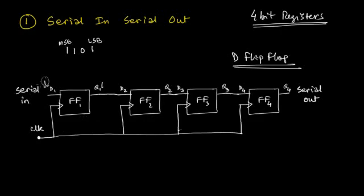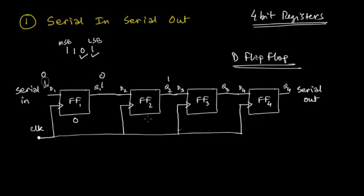On the second clock pulse, the next bit 0 comes in and is stored at the position of Q1. The previous input — that is 1 — available from the output Q1 goes as input to the second flip-flop, and on this clock pulse that 1 gets transferred to the output Q2. So now flip-flop 1 stores 0 and flip-flop 2 stores 1.